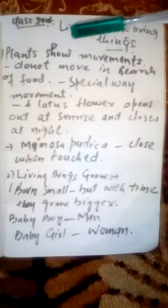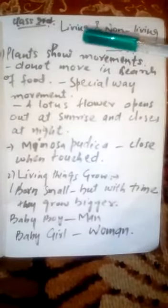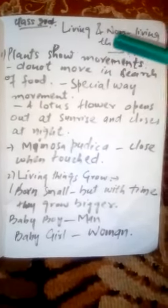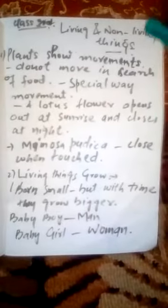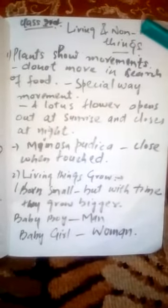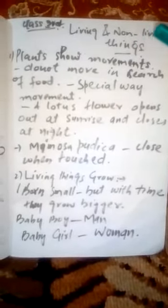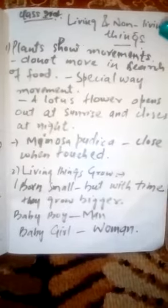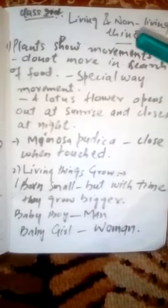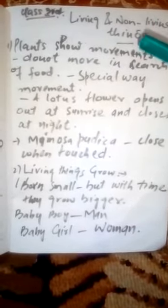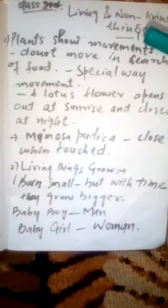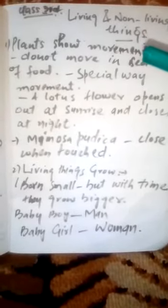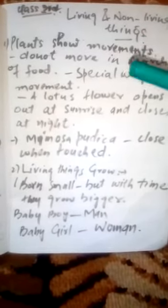This topic is for Class 3rd and the name of the topic we are reading is Living and Non-living Things. In the last topic we saw what are living and non-living things and we discussed some features of living and non-living things. Today we will read one more feature about living things and non-living things.